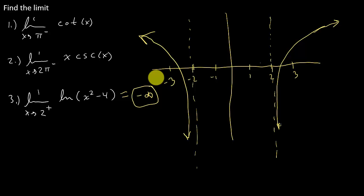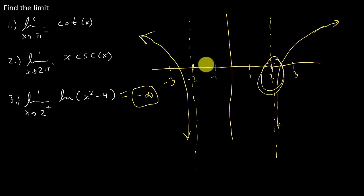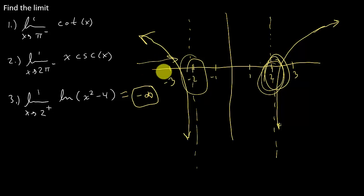One tip I would give you when doing limits is to have a good idea of what the graph looks like — know how to sketch these graphs. This graph I drew isn't exact or perfect, but it gives me a good idea of what the function is doing around the numbers I'm looking at, in this case 2. I could do the same thing with negative 2: take the limit as x approaches negative 2 from the left — that's also going to negative infinity. I hope the video helped. Check out my other videos, give me a like, share, and subscribe. Thanks for watching.